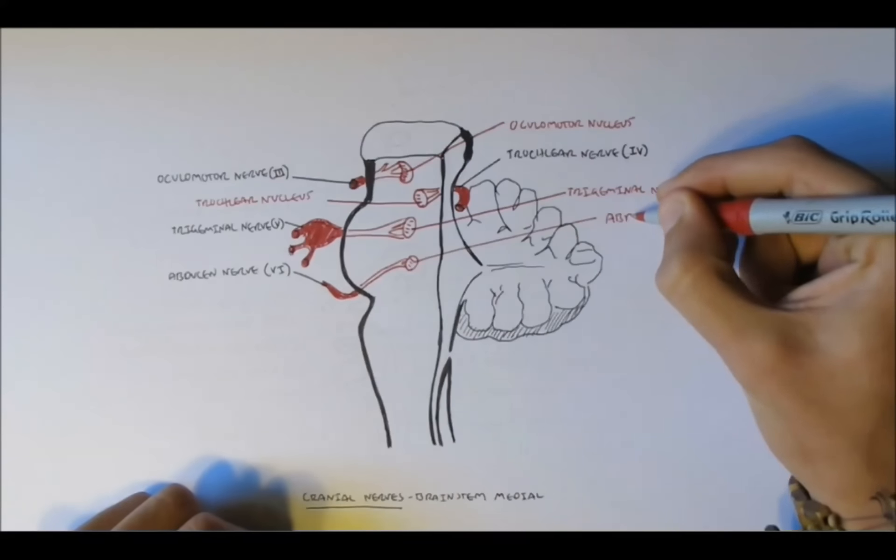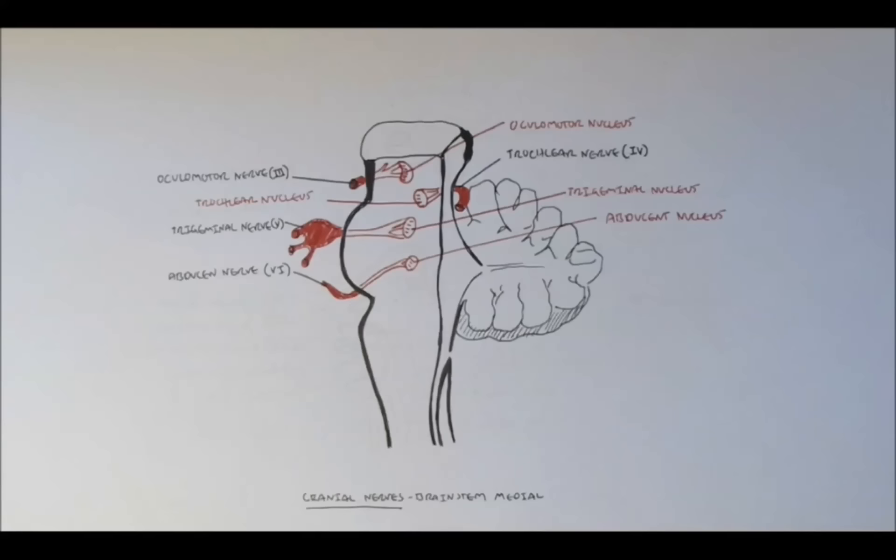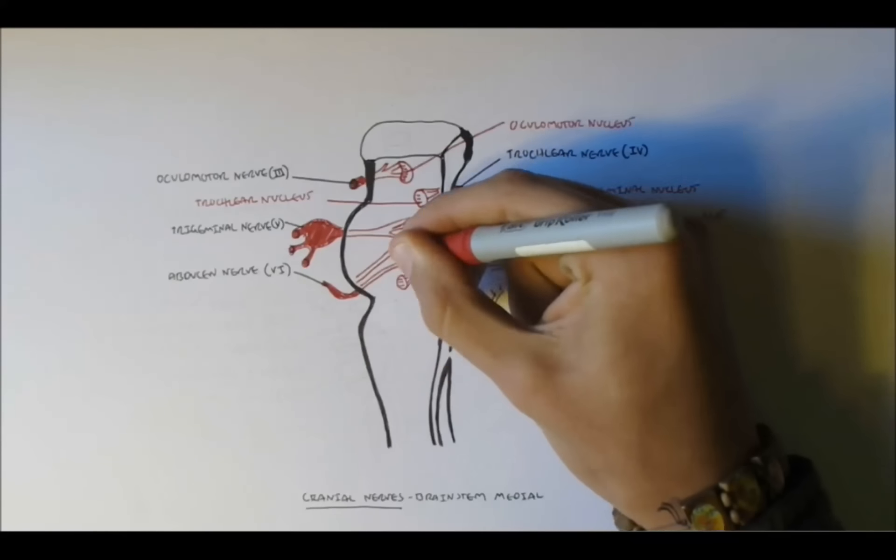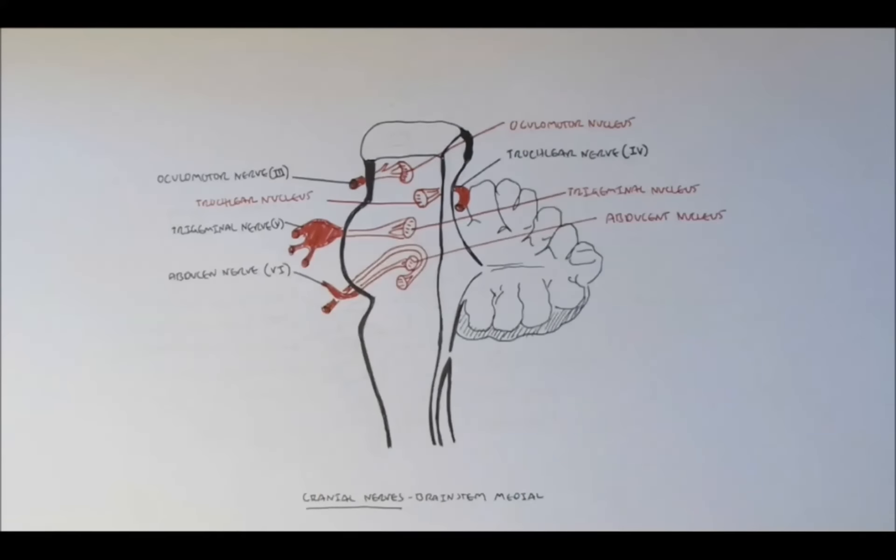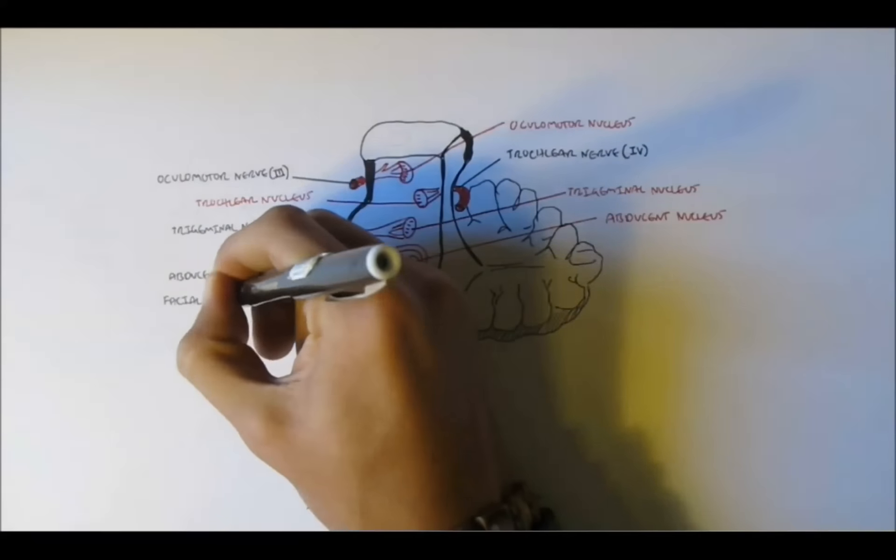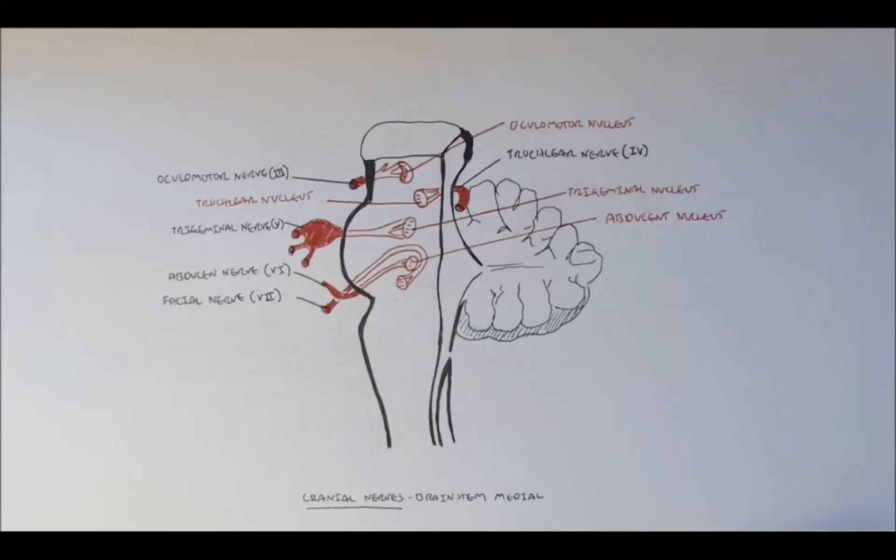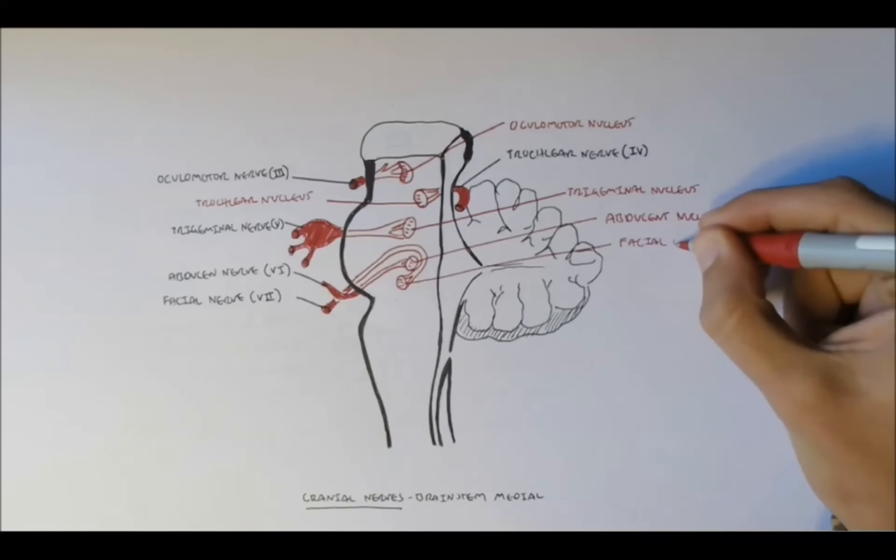So nerve 6, the abducent nerve, is located also around the pons and the abducent nucleus. And the facial nerve actually wraps around the abducent nucleus. So here's the facial nerve, nerve 7. And the nucleus is the facial nucleus.